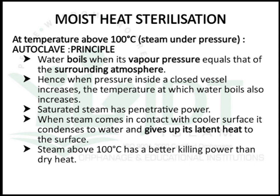Above 100°C, we use moist sterilization under pressure, with the equipment called an autoclave. The principle is that water boils when its vapor pressure equals the surrounding atmospheric pressure. At normal atmospheric pressure, this is 100°C. If we increase heat beyond 100°C, the boiling point of water does not change. To increase the boiling point, we change the atmospheric pressure by keeping water inside a closed vessel, thereby increasing atmospheric and vapor pressure.